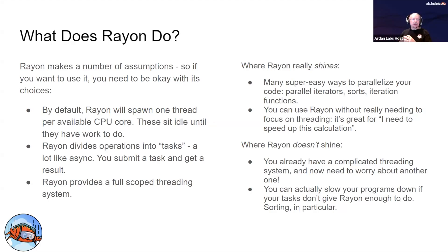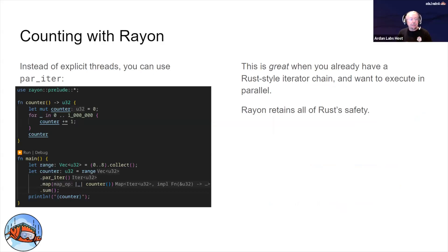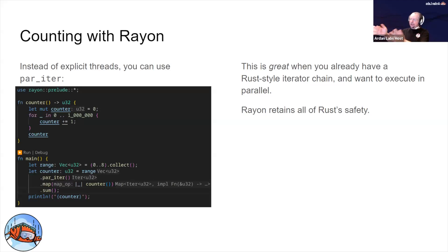Rayon really shines when making life easy — it's great for 'I have this one calculation and I need it to go faster.' Rayon doesn't shine if you've already got a complicated threading system, because then you've just added a thread pool on top of what you already have. To parallelize almost anything with Rayon it's really simple. We've got a function that does the same counting as before. Rayon by default likes to operate on iterators — you'll find lots of Rust code operates on iterators: map, reduce, fold, sum.